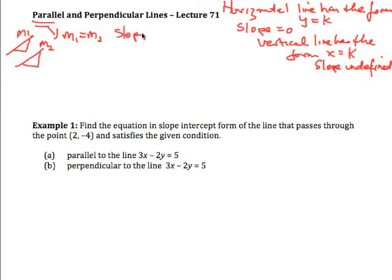In other words, the slopes are equal. So we have a result that says two lines are parallel if the slopes are equal. If two lines have the same slope then they are parallel.